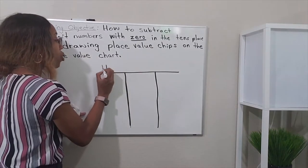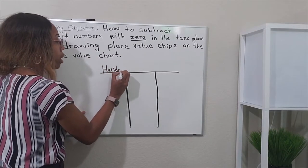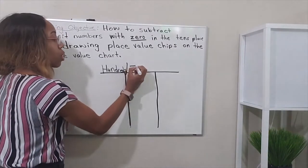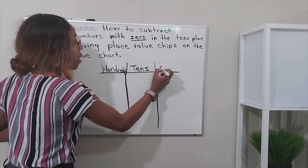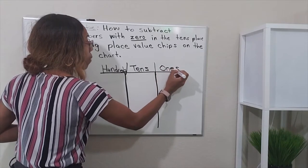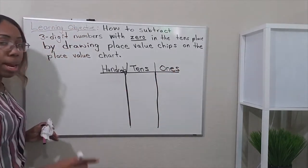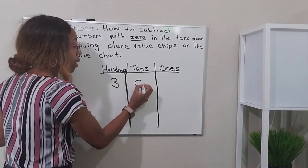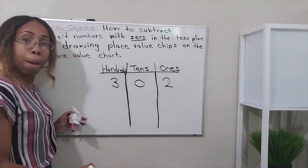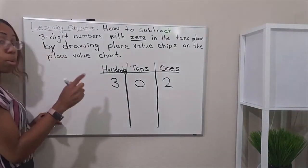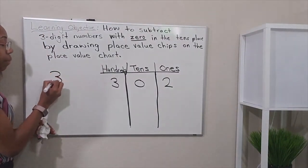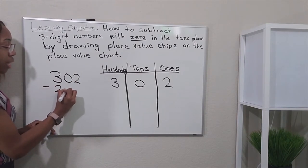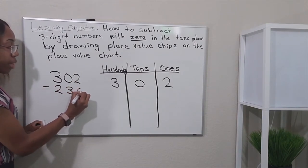When we start, we draw in the hundreds, then for the tens, and then the ones place. I'm going to create my number. The number is going to be 302 minus — I'm going to write it here so you all can see it — 302 minus 236.